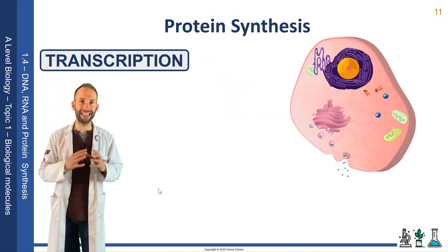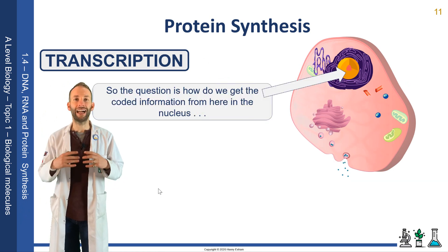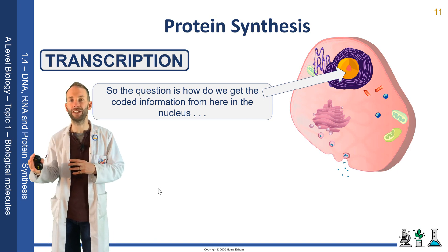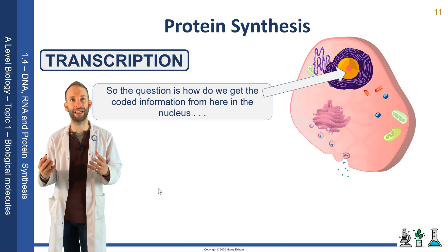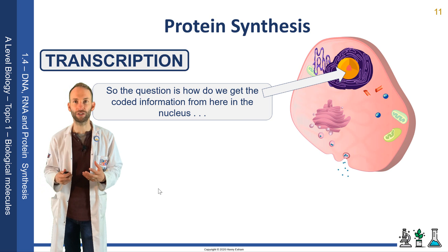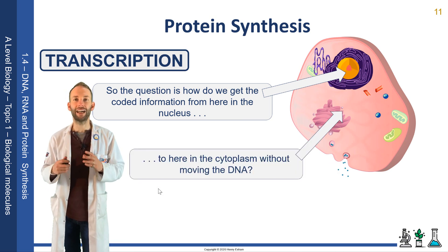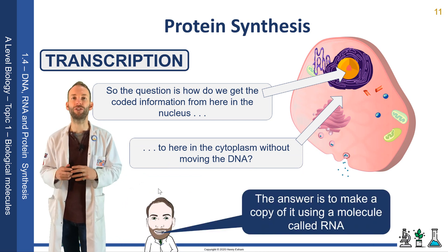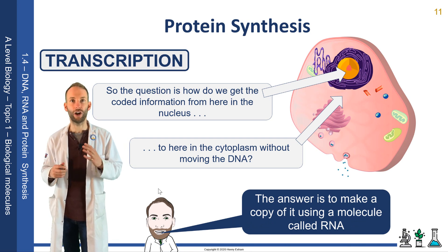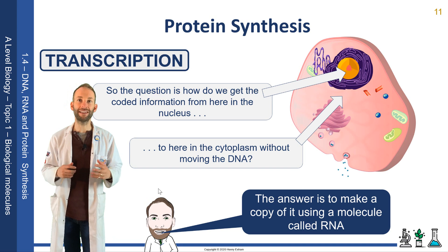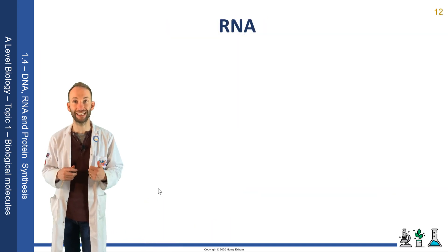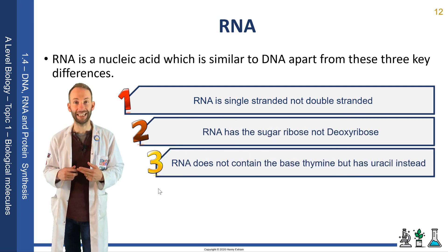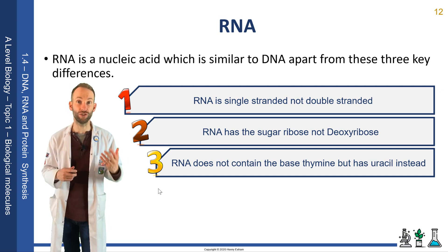Transcription is when you take the DNA, which is located inside the nucleus, and you copy that code. The DNA is a huge, long molecule and you can't have that leaving the nucleus, moving into the cytoplasm, which is where we make proteins. So what happens instead is that that particular gene code is copied into a similar molecule to DNA, which is called RNA. RNA is another nucleic acid. It's very similar to DNA, apart from three key differences: one, it's single-stranded and not double-stranded; two, it's got a different sugar — it's got ribose and not deoxyribose; and three, it doesn't have thymine — it has a base called uracil instead.